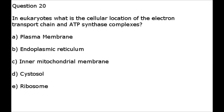Number 20. In eukaryotes, what is the cellular location of the electron transport chain and ATP synthase complexes? A. Plasma membrane. B. Endoplasmic reticulum. C. Inner mitochondrial membrane. D. Cytosol. E. Ribosome.